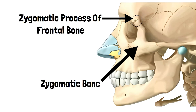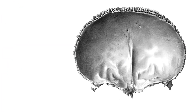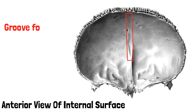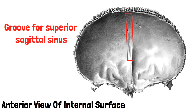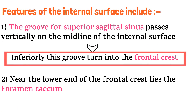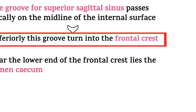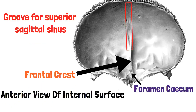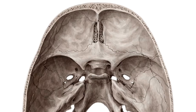Those were the features of the external surface. Now let's look at the features of the internal surface. This is the anterior view of the internal surface of the squamous part. This area marked in red is the groove for the superior sagittal sinus, passing vertically on the midline of this surface. Inferiorly, this groove turns into the frontal crest. Near the lower end of this frontal crest lies the foramen cecum.